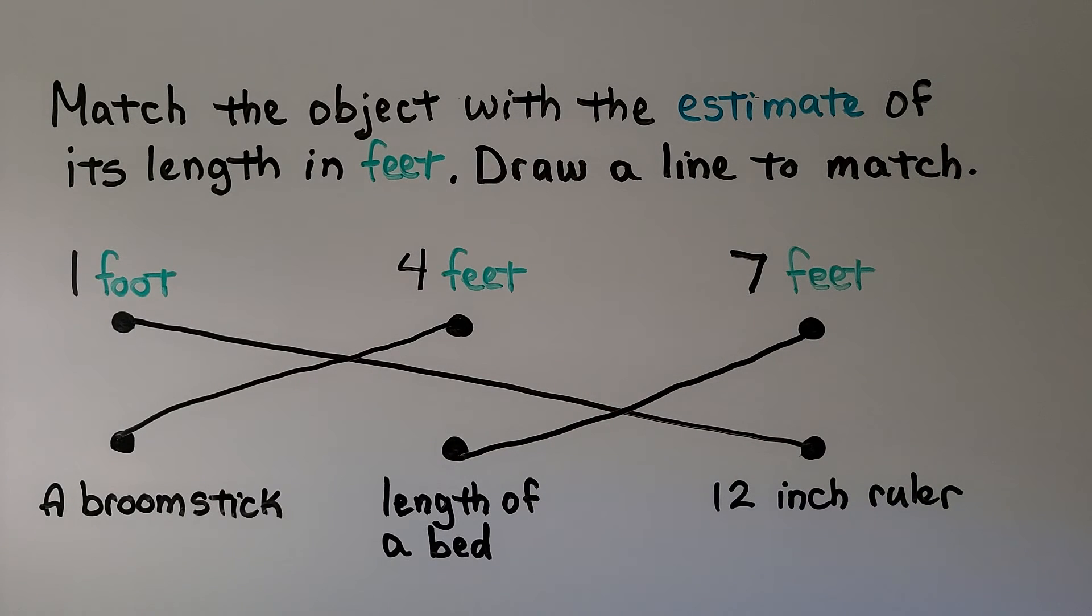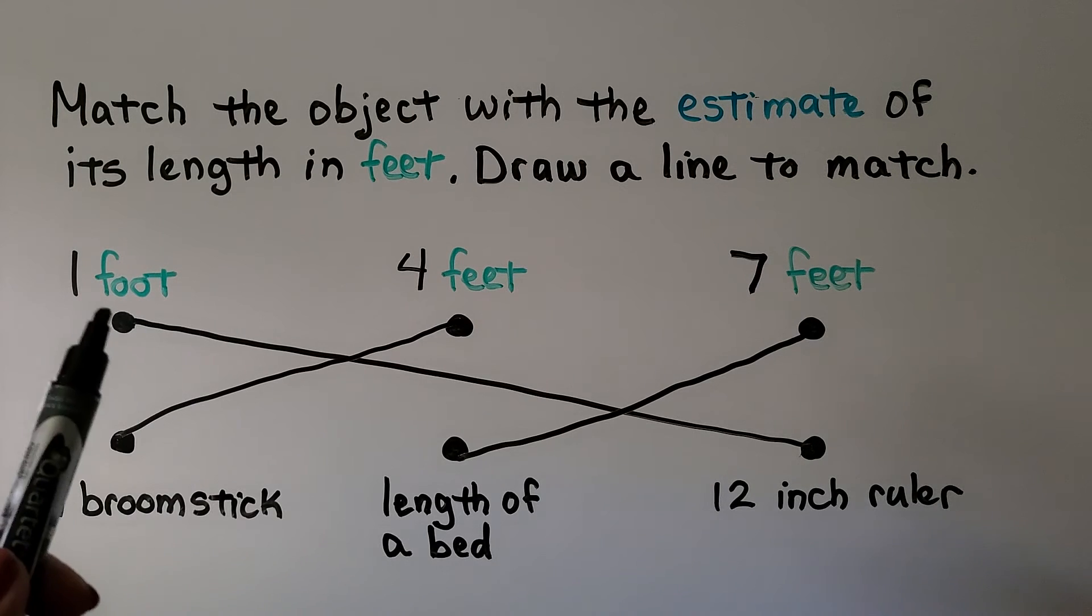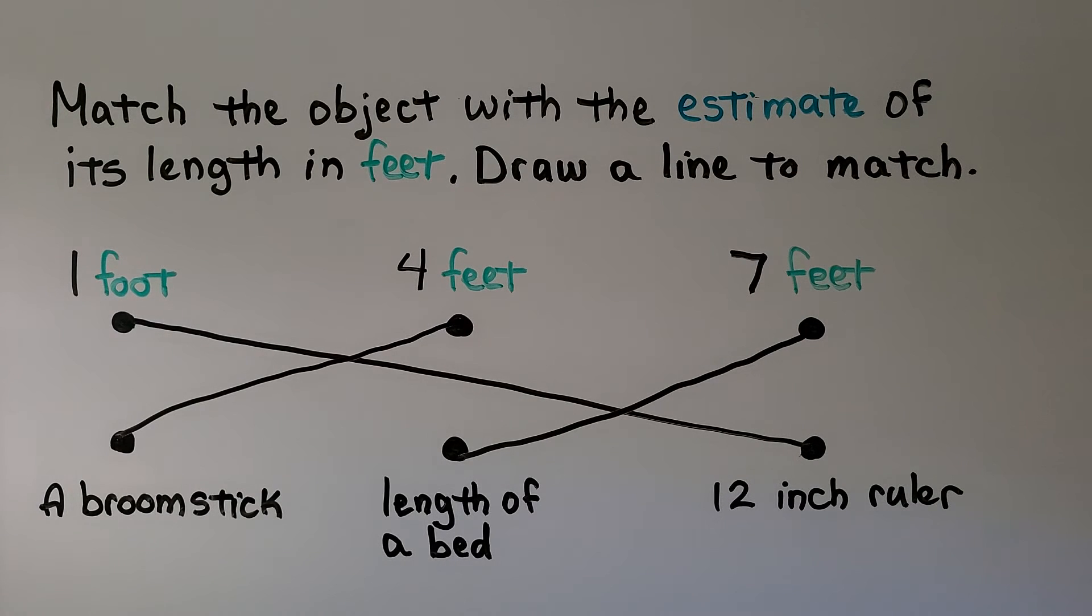And these aren't exact. These are estimates. So that means they're a good guess. They're close. The only one that's exact is 1 foot with the 12-inch ruler.